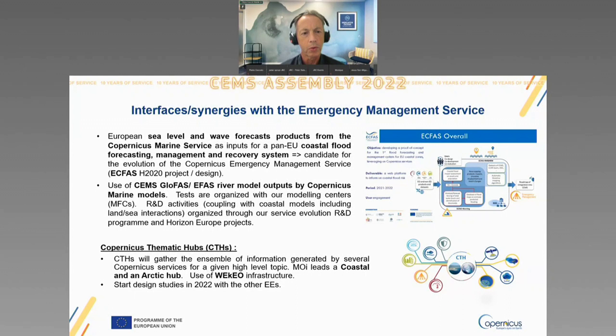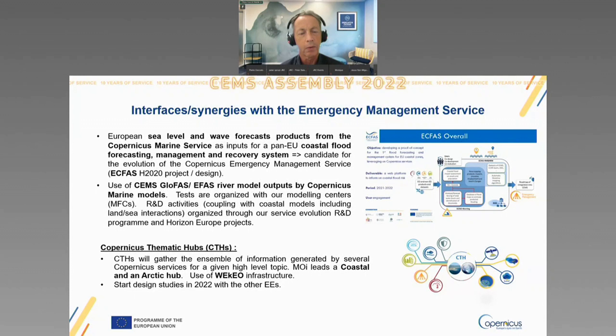Here we are working on the provision of European sea level and wave forecast products from the Copernicus Marine Service that could become a regular input of this system. This is a very important project for us. On the other side, we are also using products from the Emergency Management Service, in particular river model products, because all the Copernicus Marine models have to be forced by river outflow. We are starting to test with our modeling centers the impact of EFAS river model output, including coupling with coastal models operated by member states through our service evolution R&D program and Horizon Europe projects.